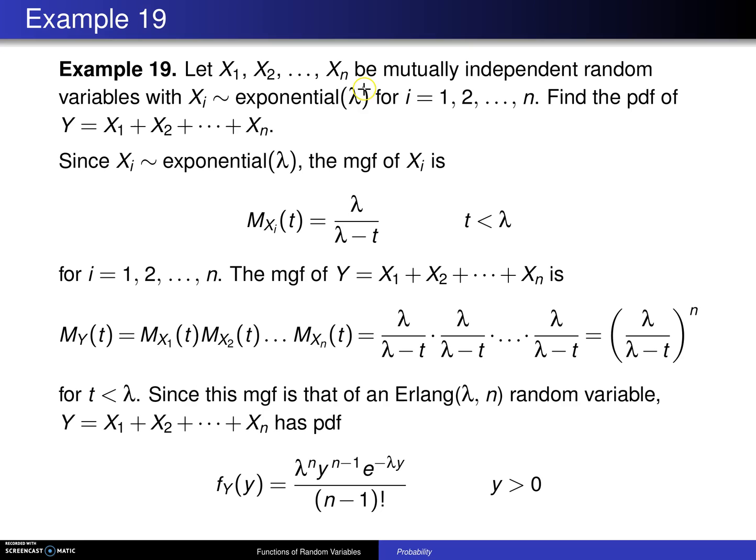So one slight difference here is every one of these x values, x sub i values, is identically distributed. They all have the same distribution this time, rather than λ changing from one exponential to the next. Find the probability density function of the sum.